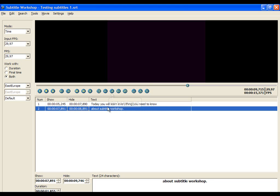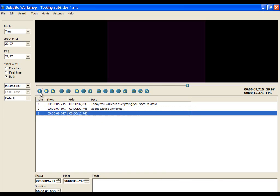And continue with that process — that is pretty much what you will do all the time. One more useful tip: if you want to go to the start time of a certain subtitle line, you just have to double-click it, and the program will automatically bring you to the beginning of that subtitle line. I think that is the most useful thing in Subtitle Workshop. Now just follow this process and you will be able to create great subtitles for your movie.